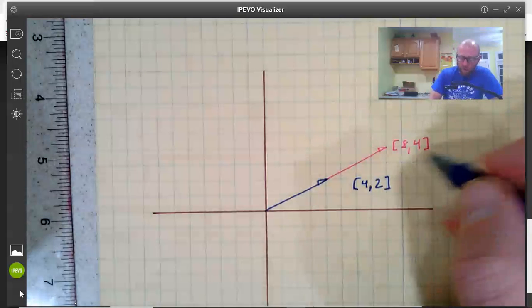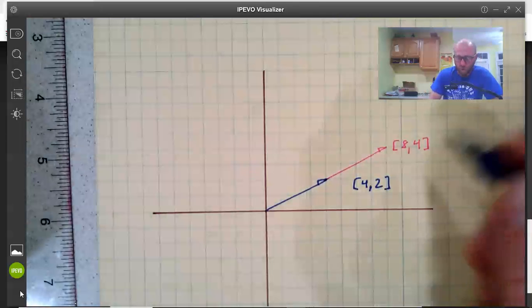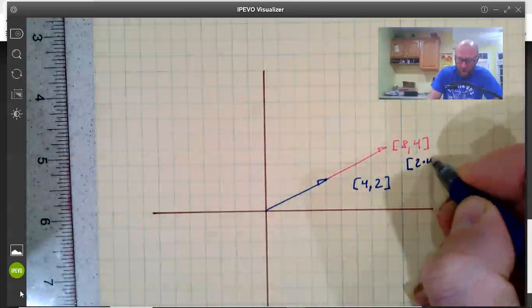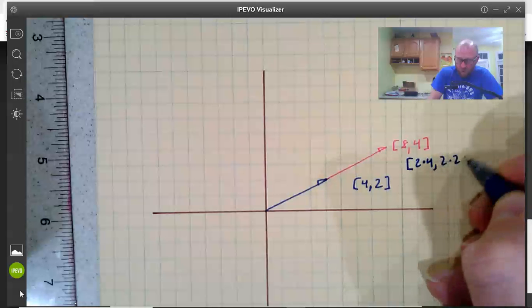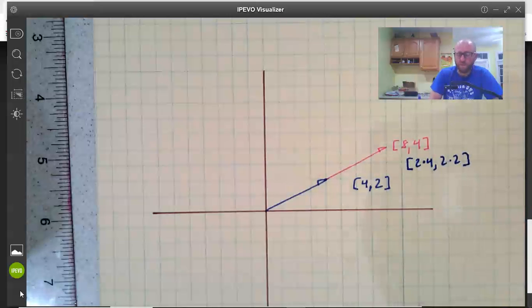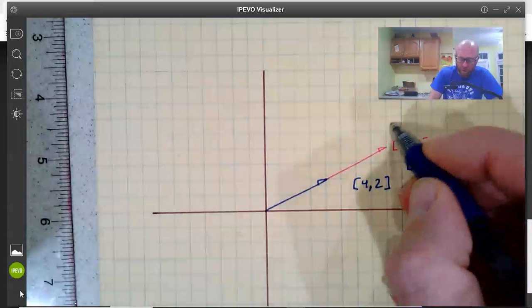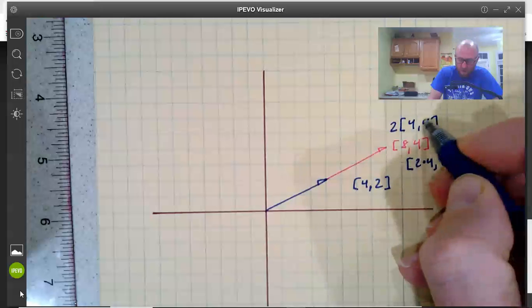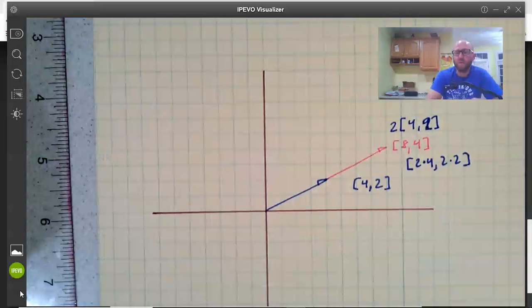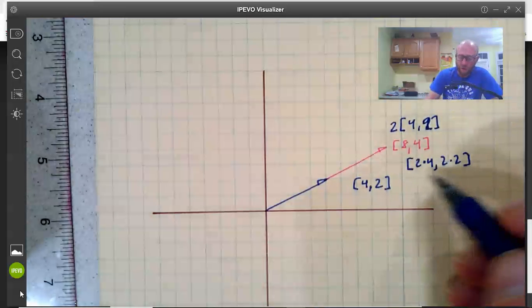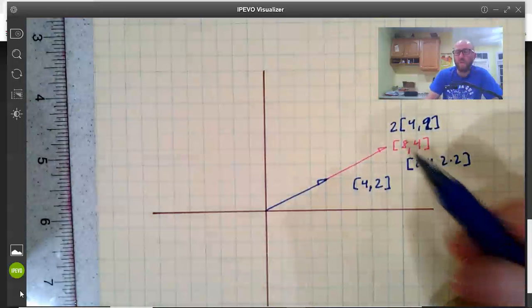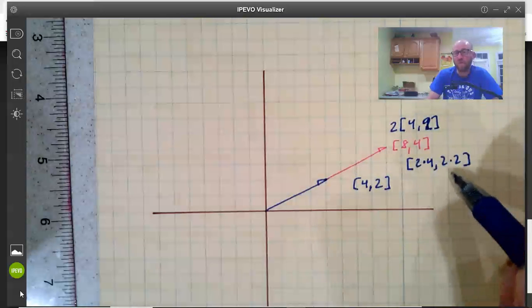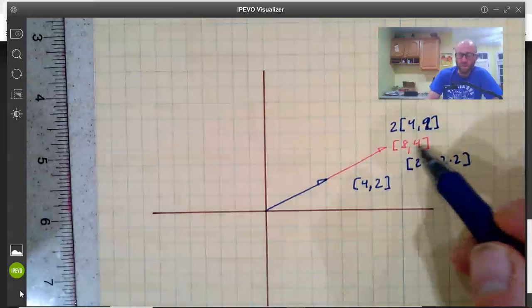Now this (8,4) here I could represent this a couple different ways. I could represent it as (8,4) which is really 2 times (4,2). Or I could think of it as 2 times the vector (4,2). So I could multiply each component by 2 itself to get (8,4). So I take (4,2) and I multiply the x and y components separately by 2 to get (8,4).